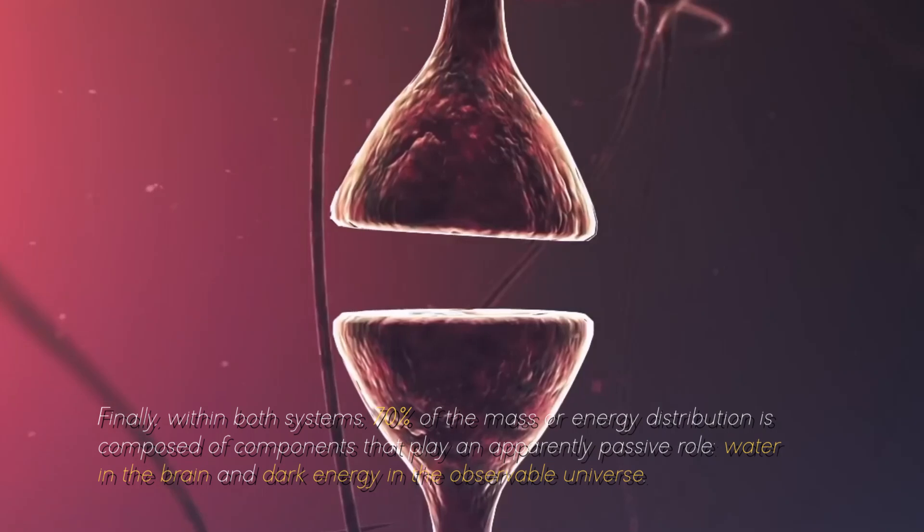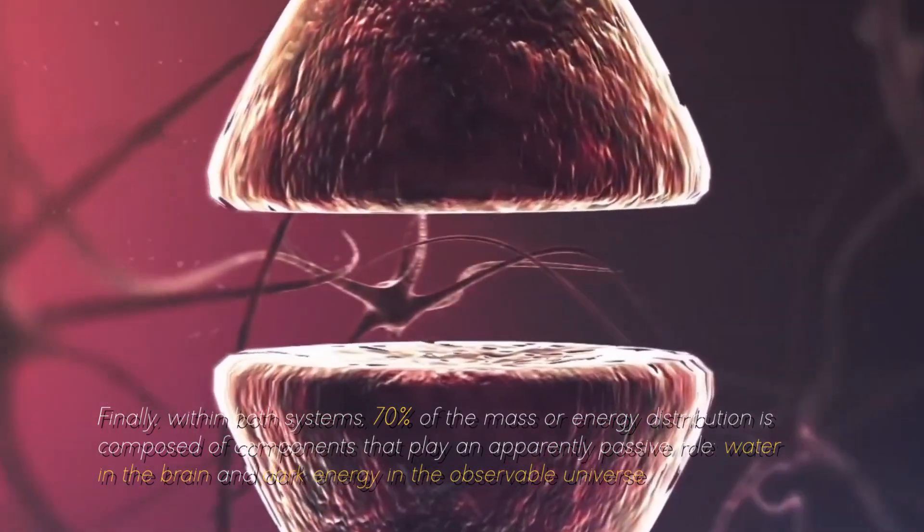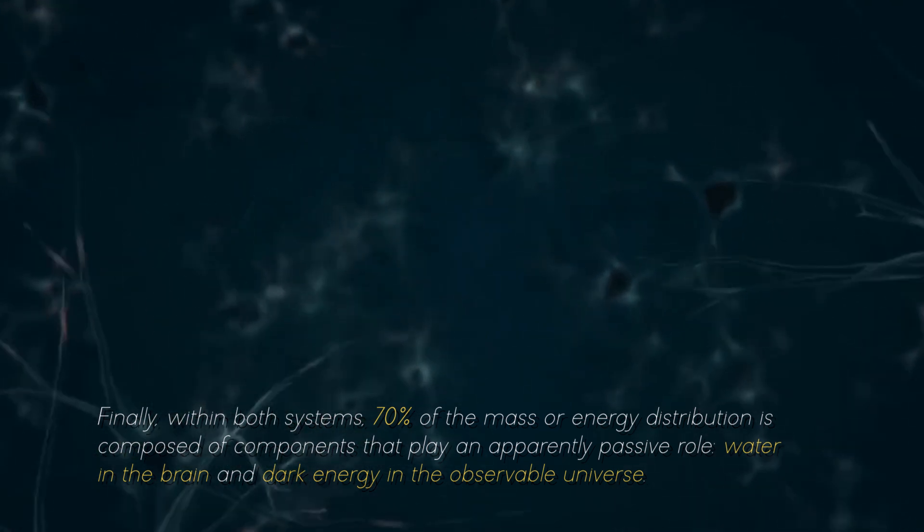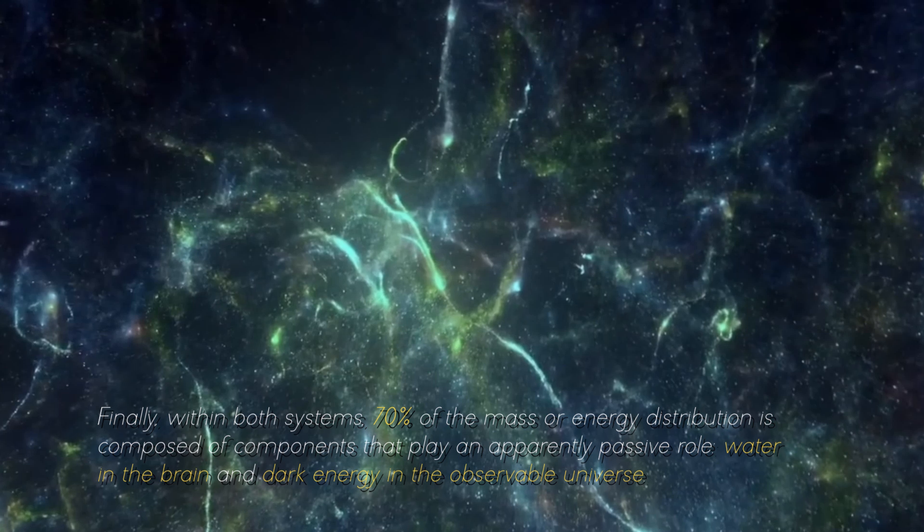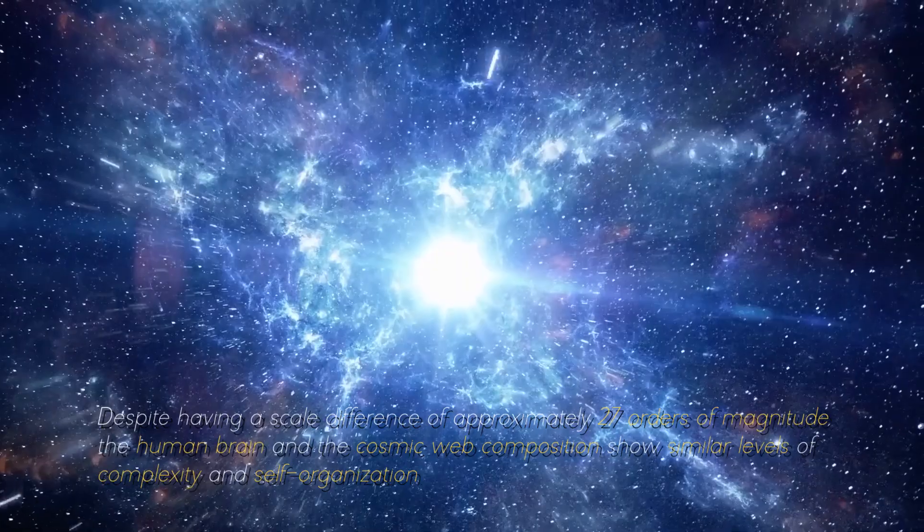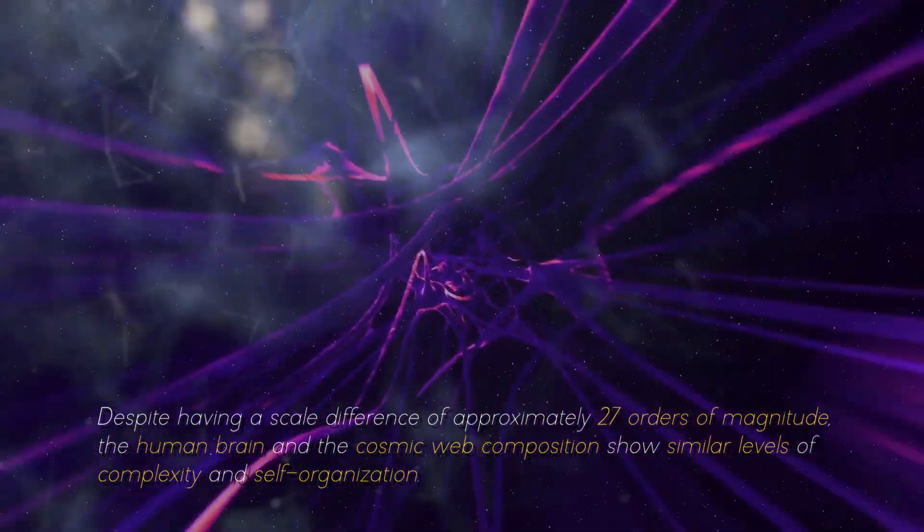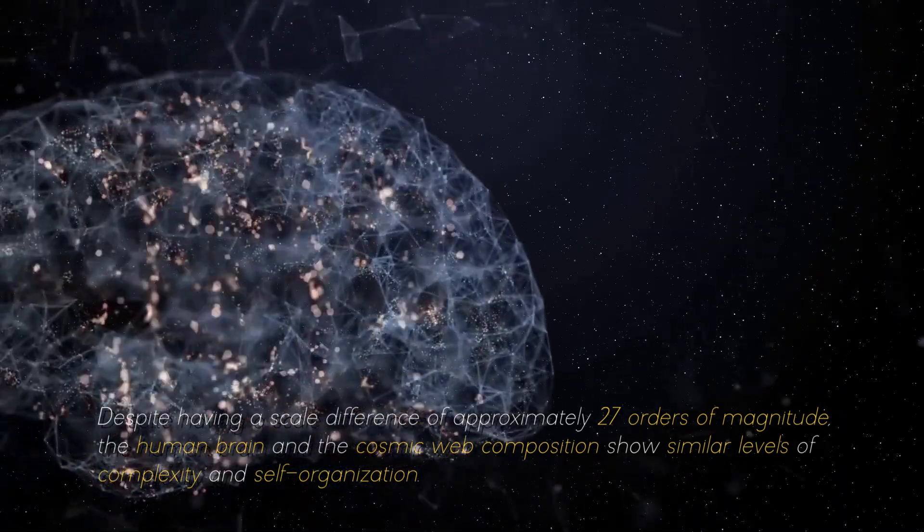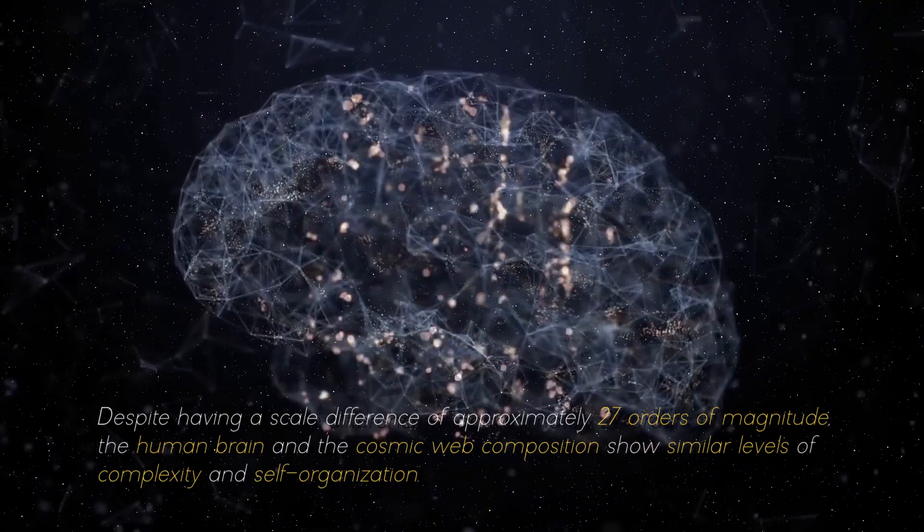Finally, within both systems, 70% of the mass or energy distribution is composed of components that play an apparently passive role, water in the brain and dark energy in the observable universe. Despite having a scale difference of approximately 7 orders of magnitude, the brain and the cosmic web composition show similar levels of complexity and self-organization.